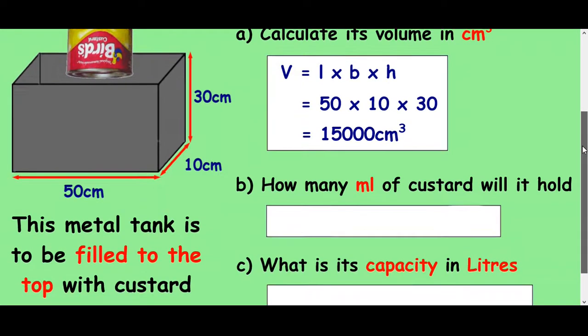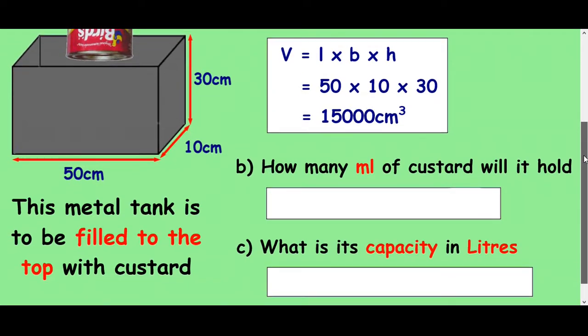Okay, we're now being asked about how many milliliters of custard will this hold. Well, from the last lesson, we knew that one centimeter cubed was the same as one milliliter. So that's easy. That's just 15,000 centimeters cubed is equal to 15,000 milliliters.